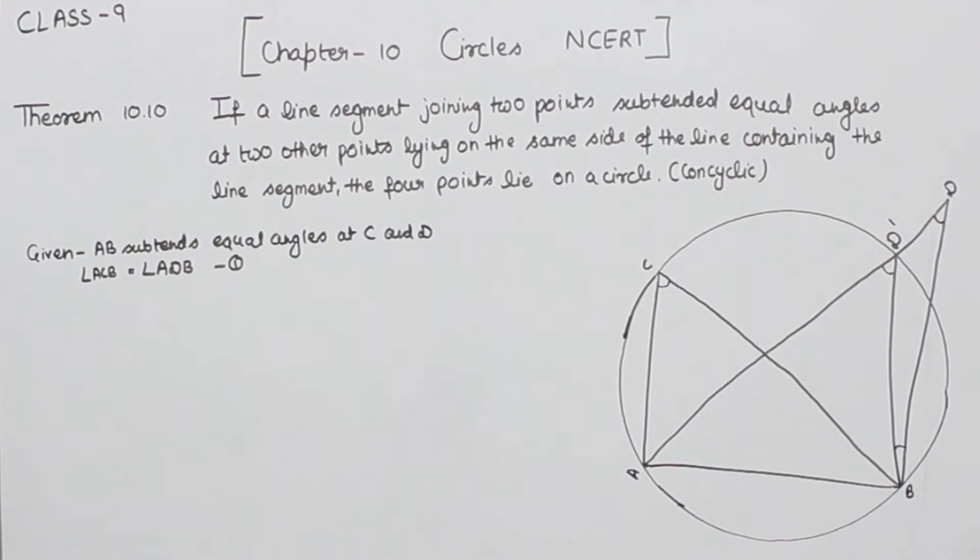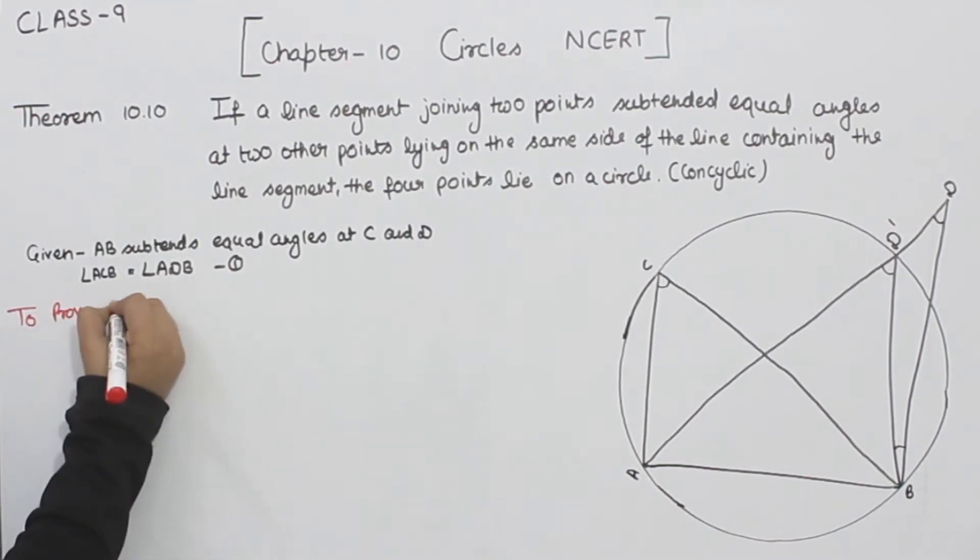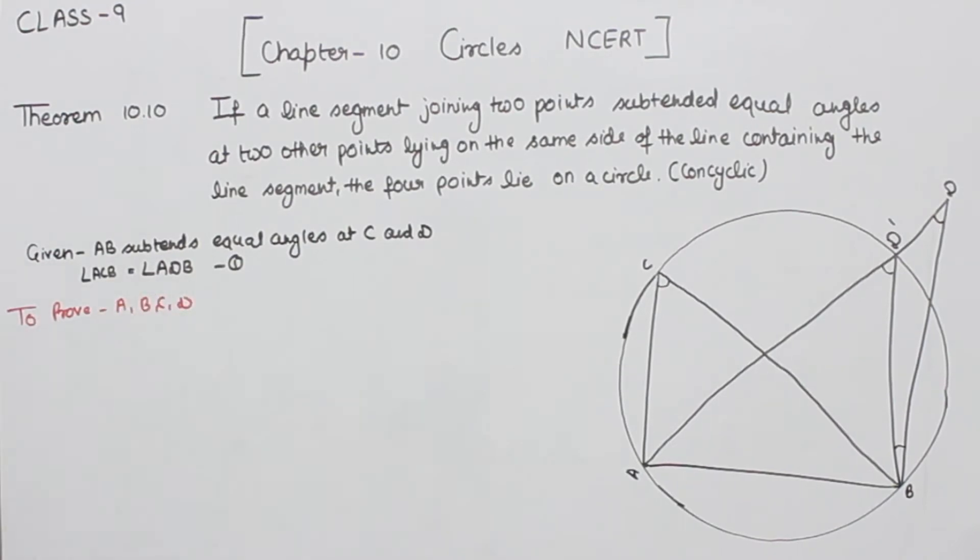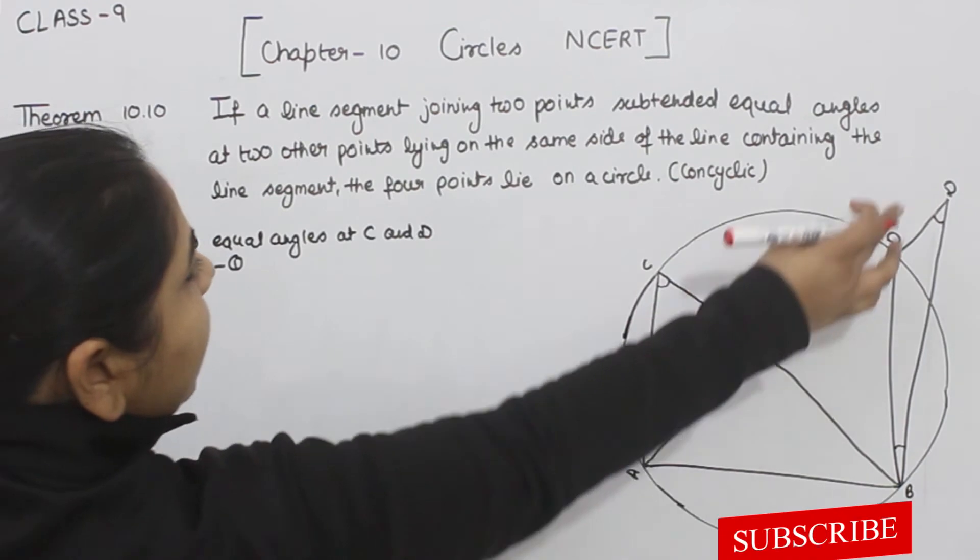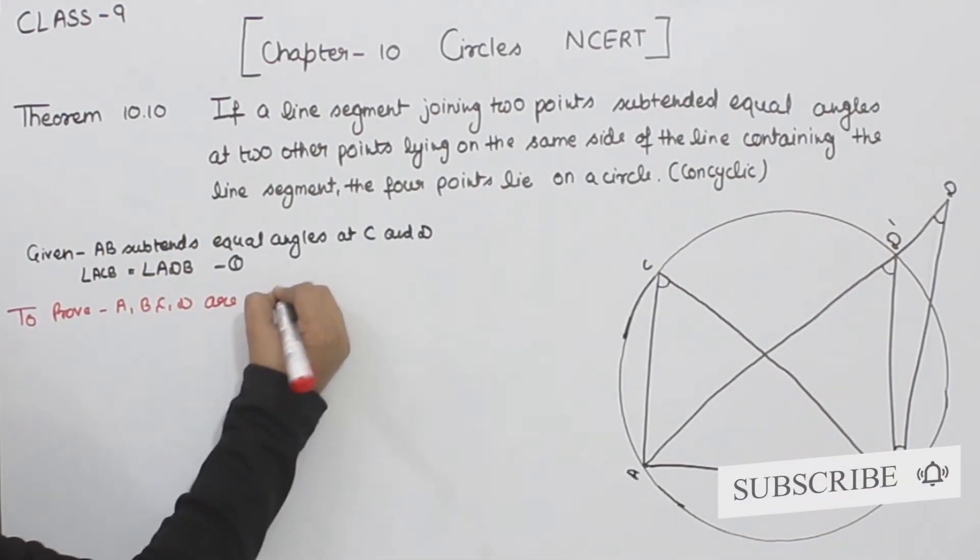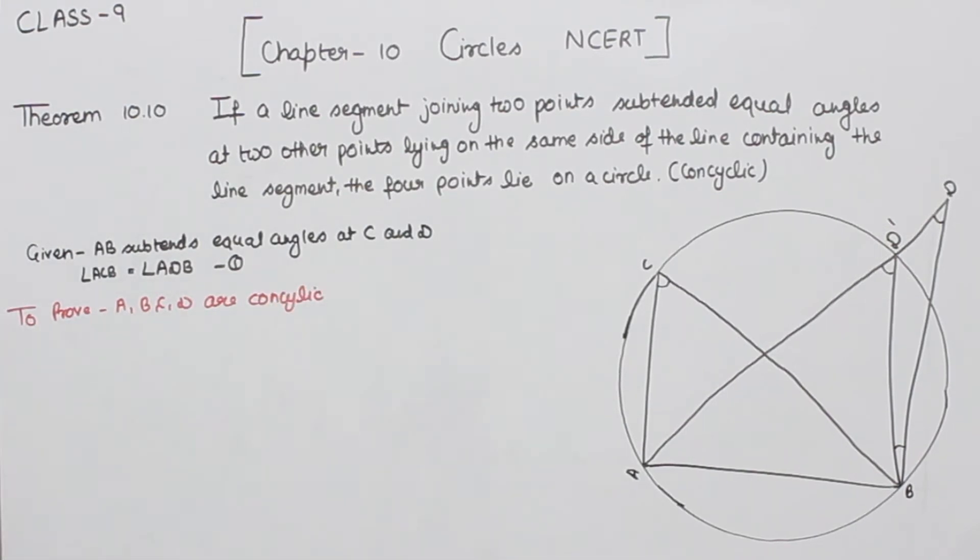Now what we have to prove? We have to prove that A, B, C, D, the four points A, B, C, and D are concyclic. That means they lie on the same circle.